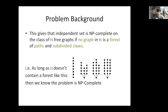The only graphs that don't meet at least one of these three conditions are graphs that are forests of paths and subdivided claws. This gives us that independent set is NP-complete on the class of fancy H-free graphs if no graph in fancy H is a forest of paths and subdivided claws. In other words, as long as fancy H does not contain a forest of that form, the problem is NP-complete, just by this simple reduction.